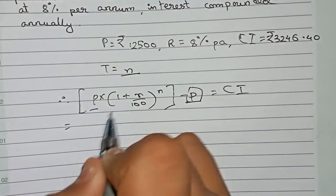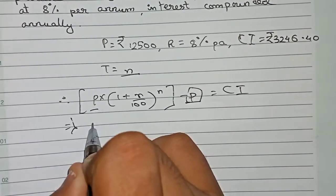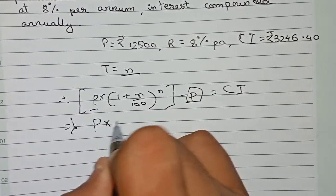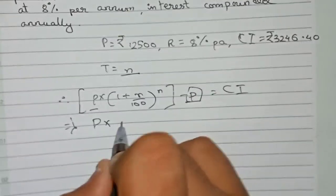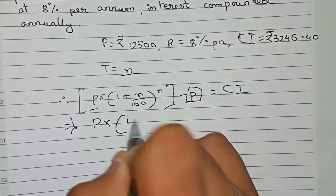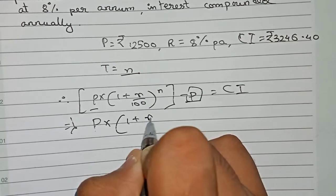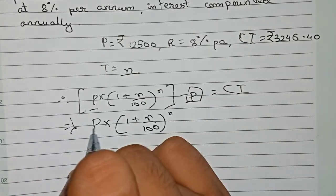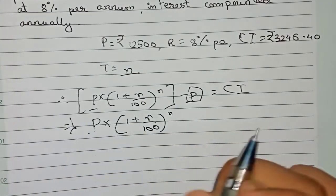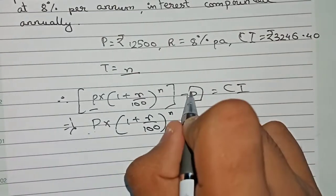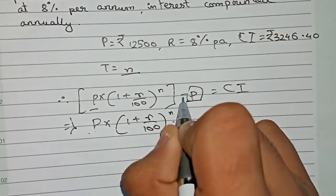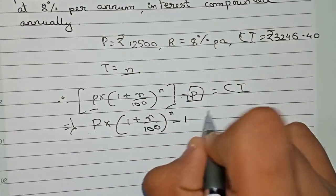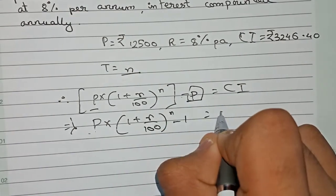Now we reduce this by taking P as common. So it becomes: P × [(1 + R/100)^n − 1] = CI.